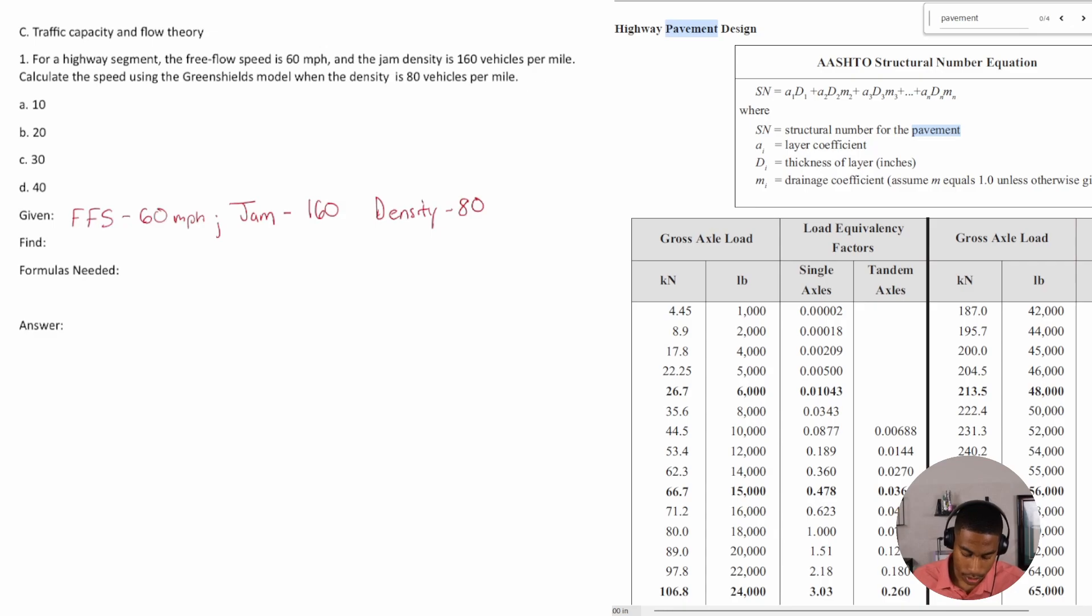All right, so that's all the information that we're given. And what are we trying to find? We're trying to find the speed and we want to use Green Shields model.